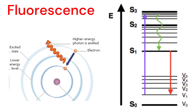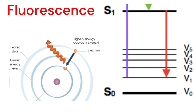Fluorescence, a slower process, occurs when a substance emits light after absorbing electromagnetic radiation. Fluorescence commonly occurs between the first excited singlet state, S1, and the ground state, S0, of a molecule.